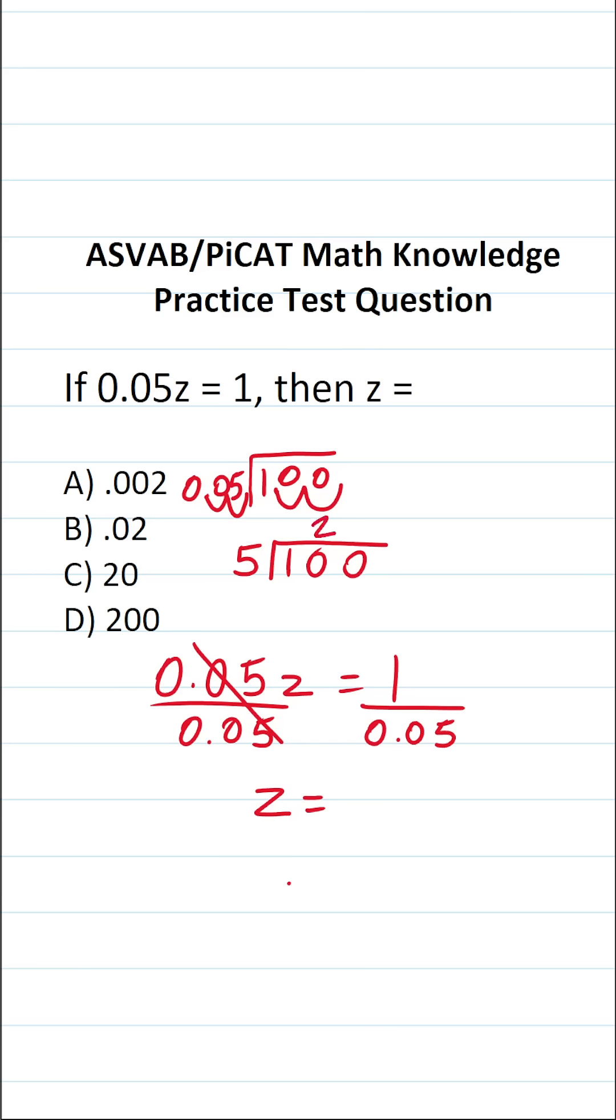You should know that 20 times 5 is exactly 100 with no remainder. So in other words, 1 divided by 0.05 is 20. So the answer to this one is C.